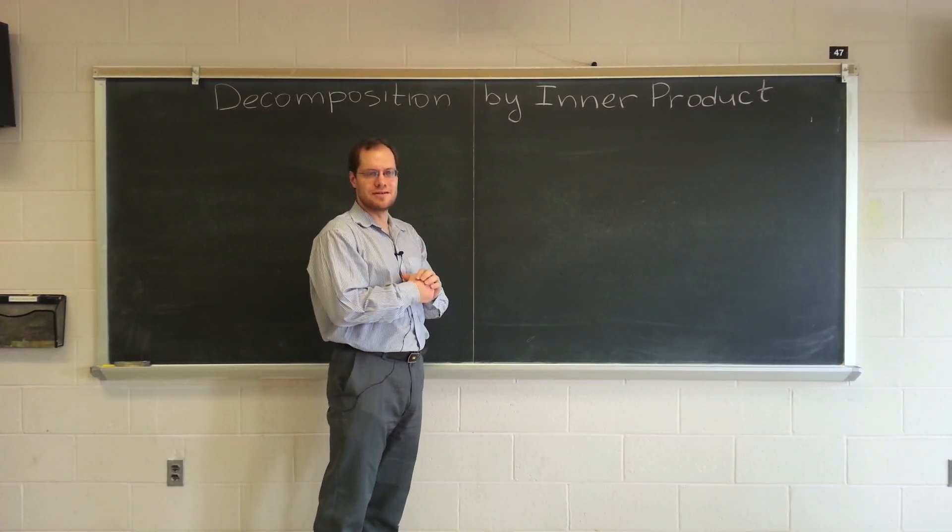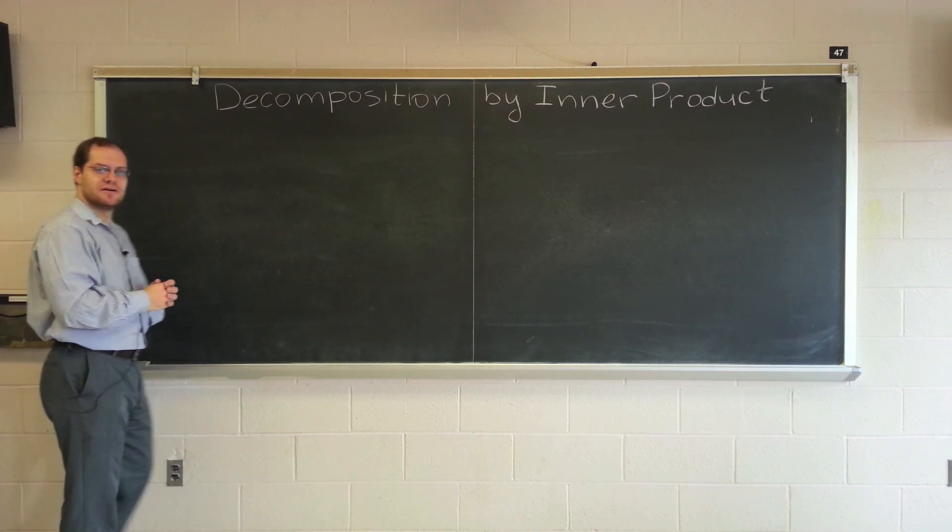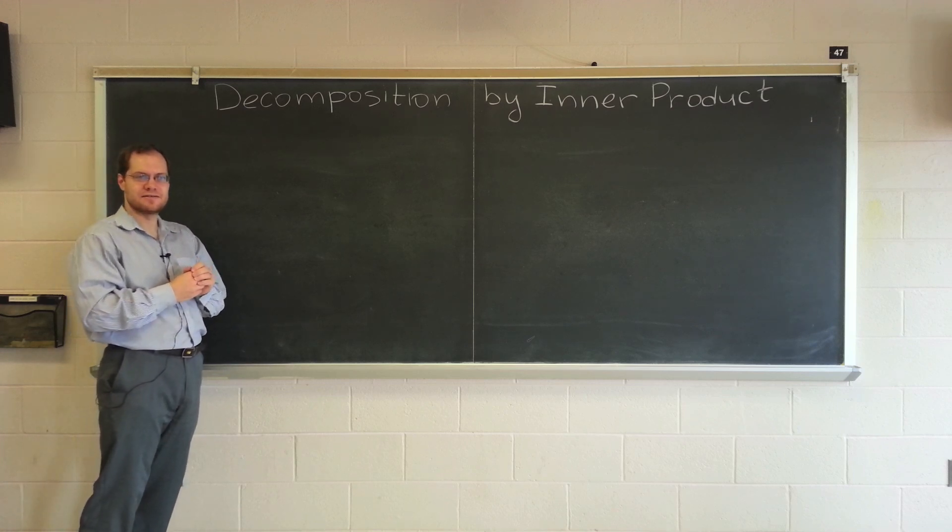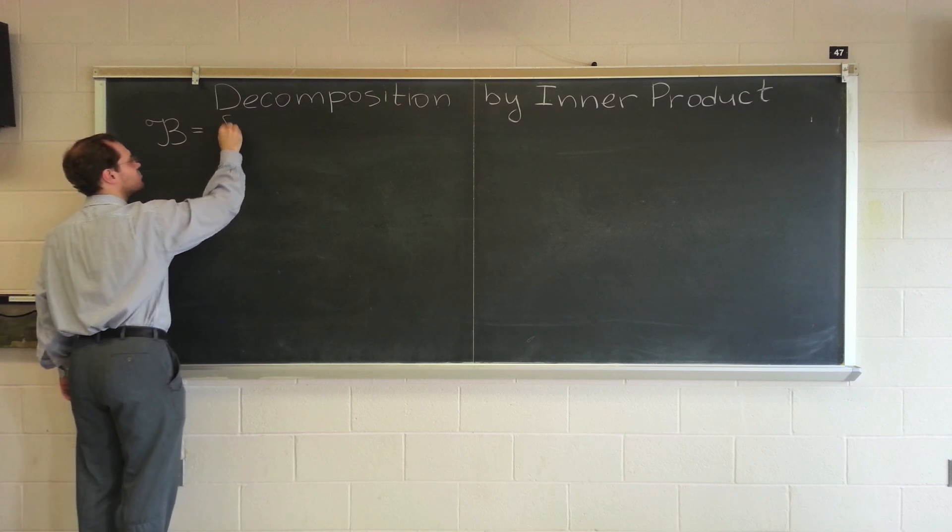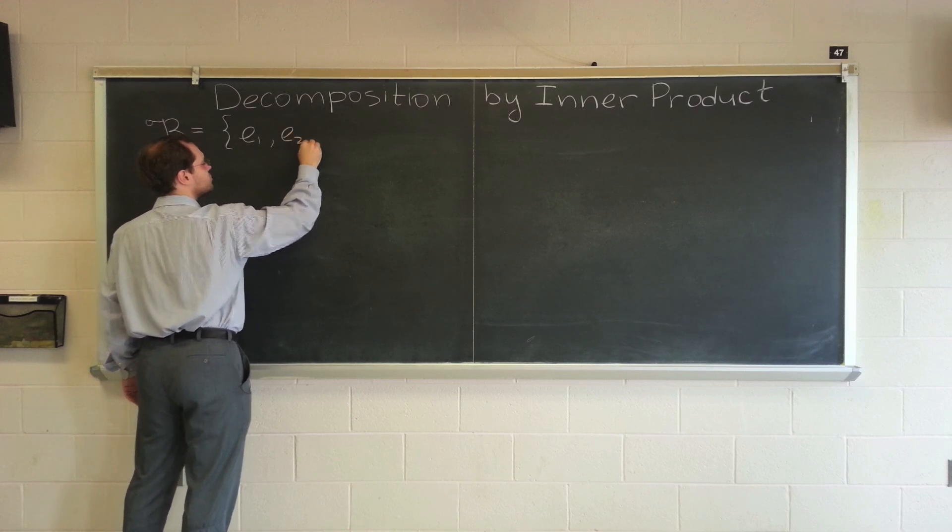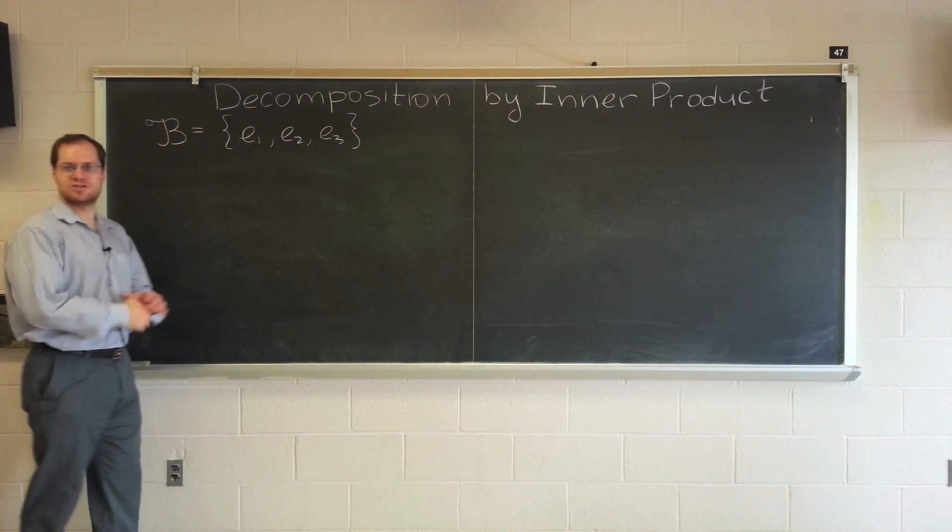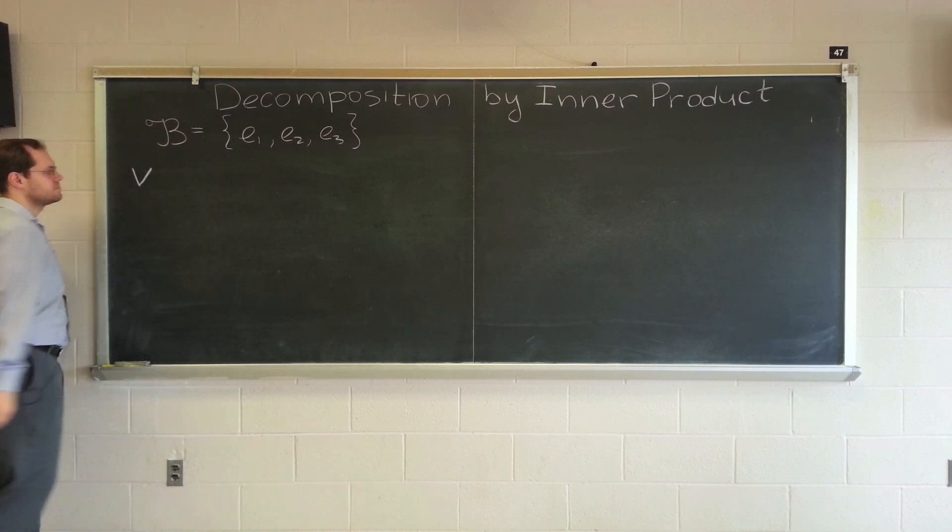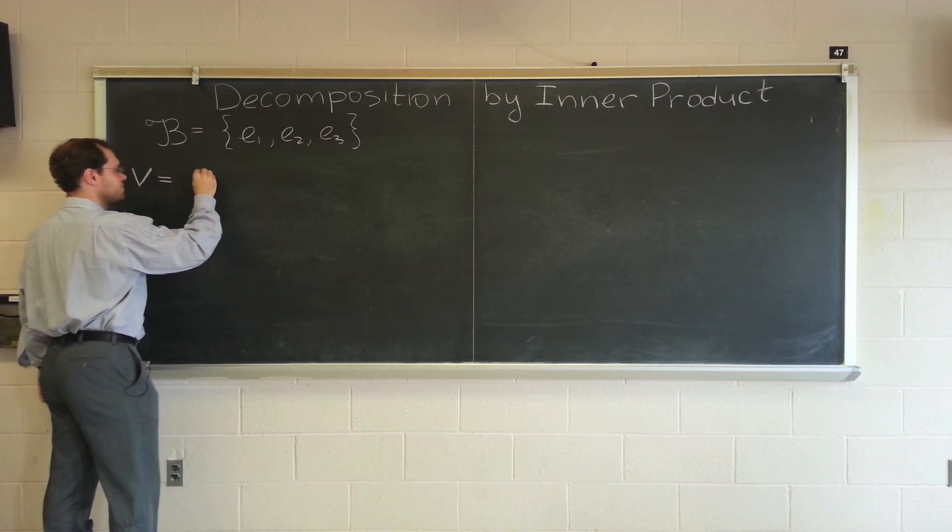Here's another topic from linear algebra that finds a much better expression in tensor terms. In linear algebra you know the following trick for decomposing a vector with respect to an orthogonal basis by evaluating inner products. So suppose we have a basis that consists of three orthogonal vectors, e1, e2, e3, and I'm not writing arrows over these e's because I want to work in a general linear space with a general inner product.